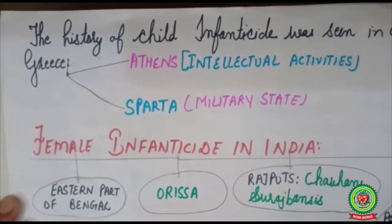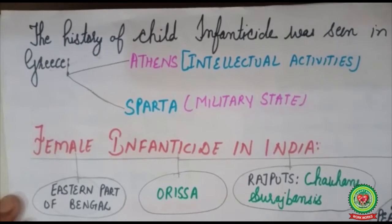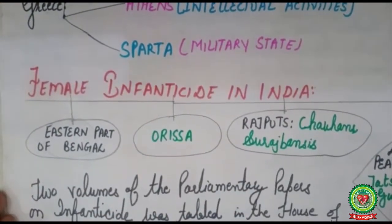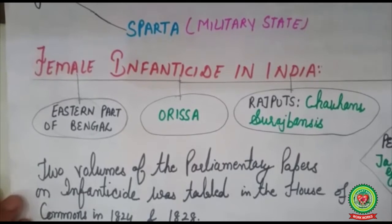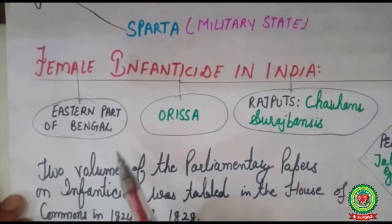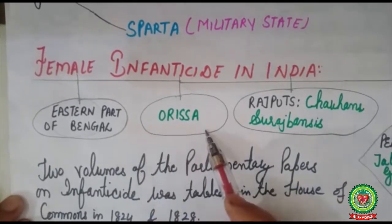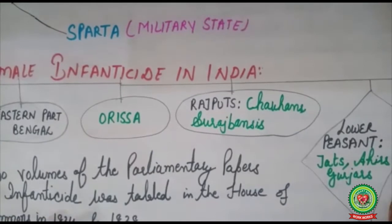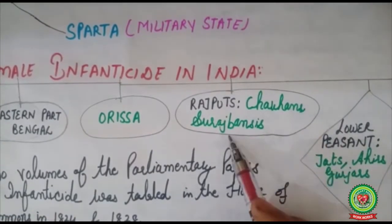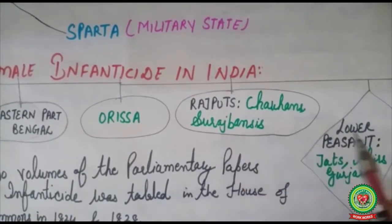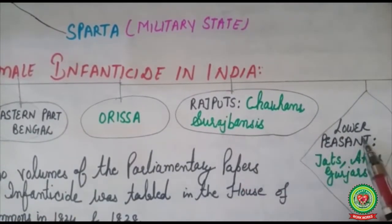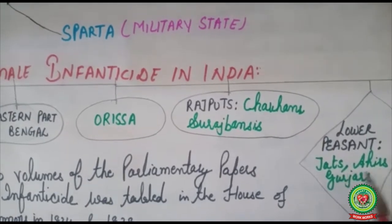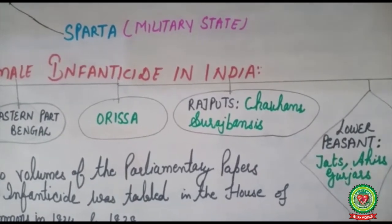But in India, it was not child infanticide — it was female infanticide, which was prevalent especially in the eastern part of Bengal, among the Rajput clans of Chohan and Surajbansis, and also among lower peasants of Jats, Ahir and Gujars.